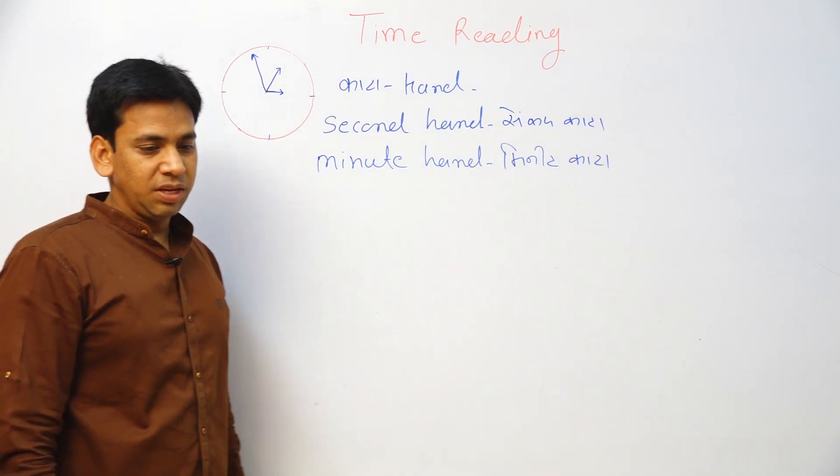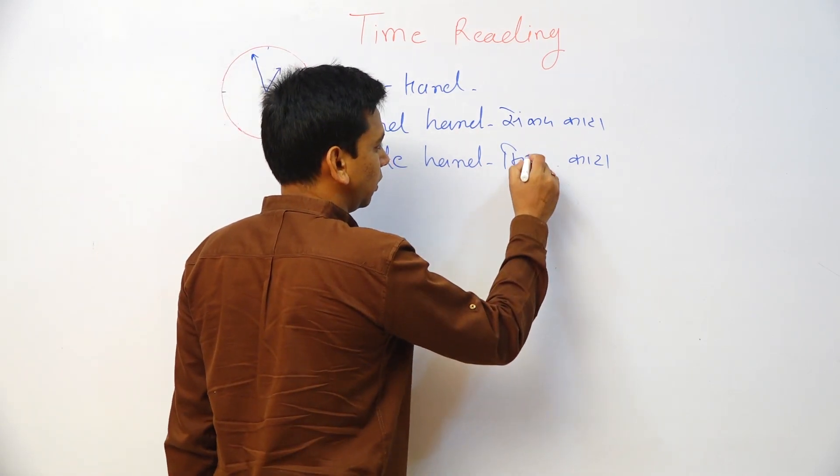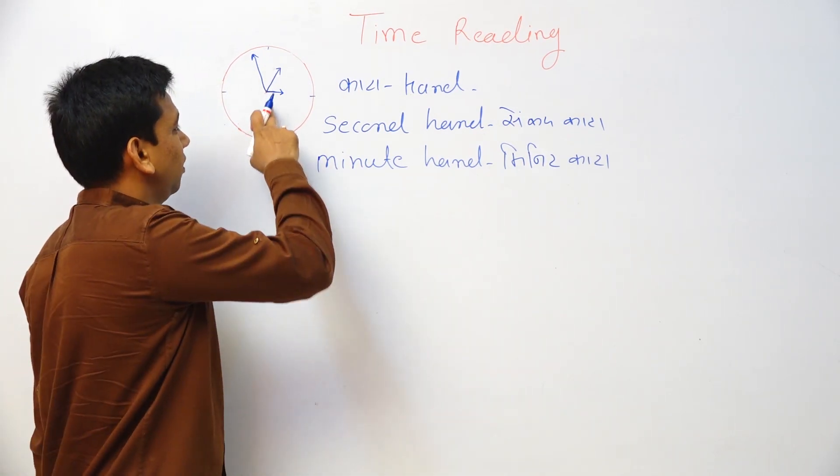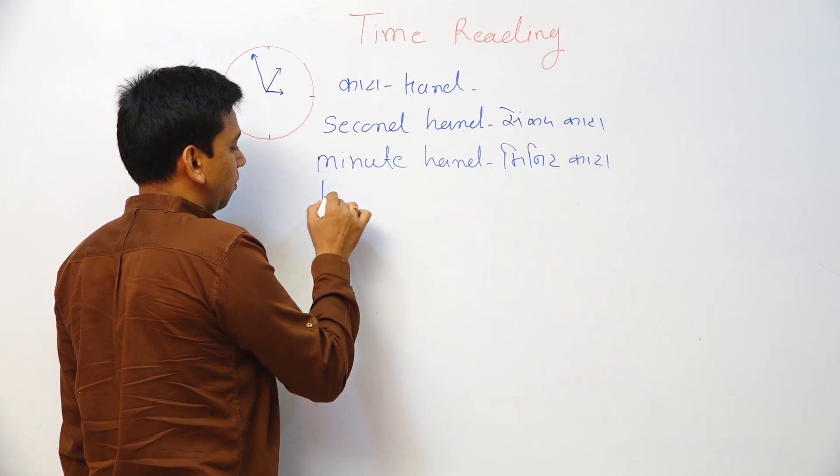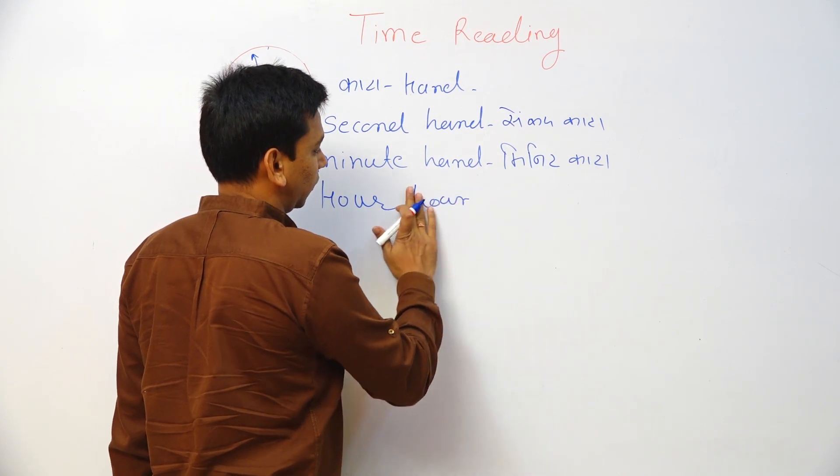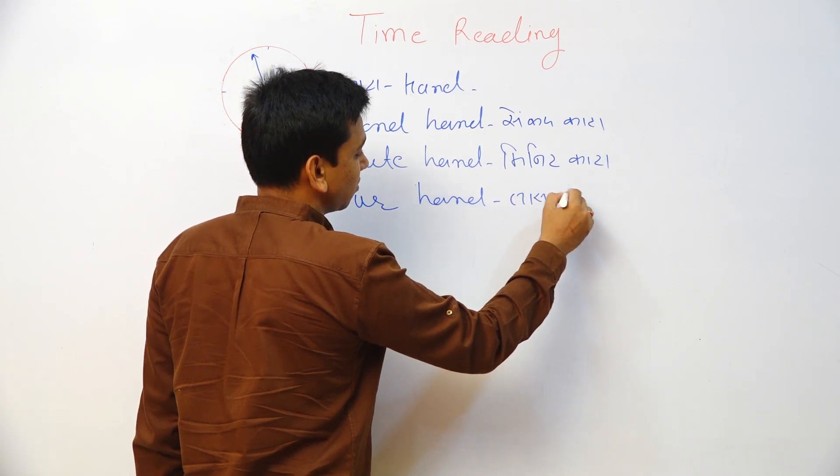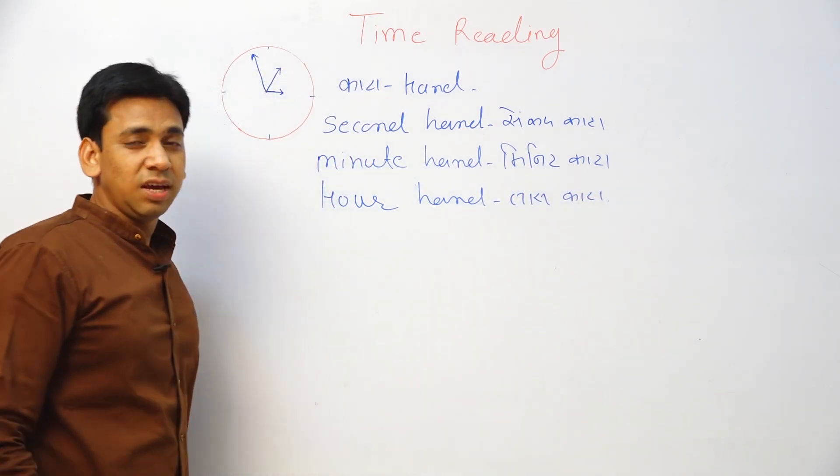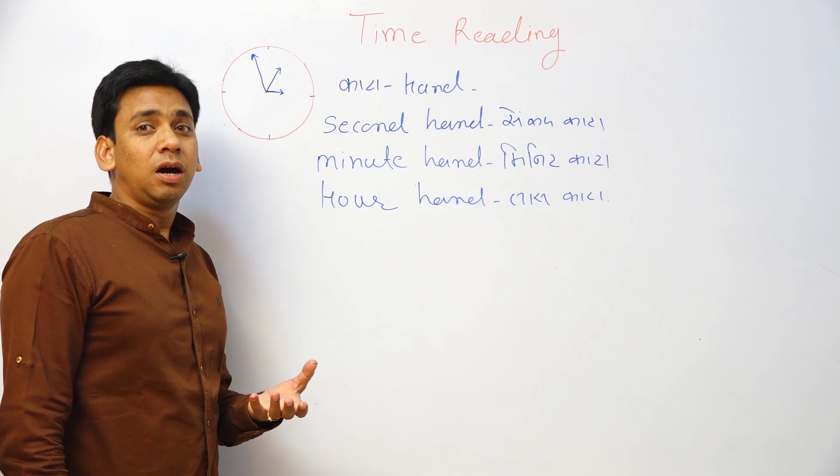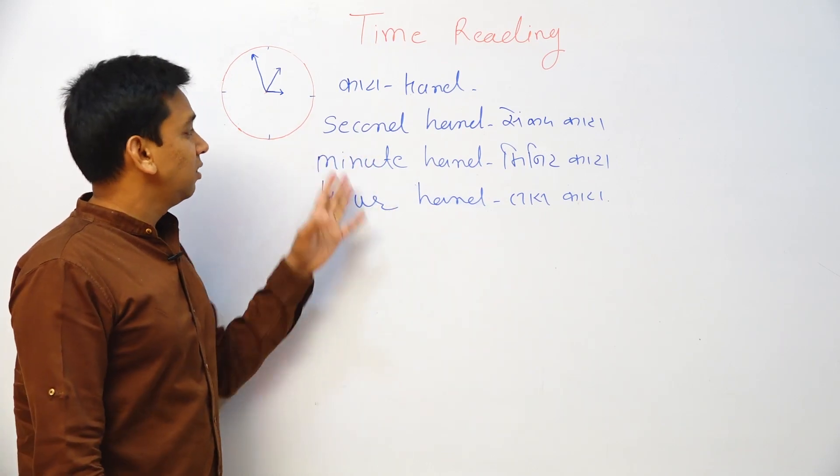This is called minute hand. This is the first one only, minute hand. Now third concept is there: hour hand. That is called hour hand. Now there are three hands: first is second hand, minute hand, hour hand. These are the three hands.